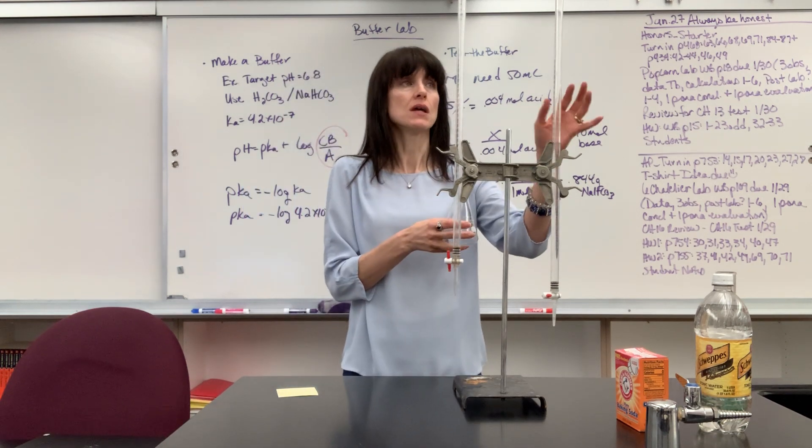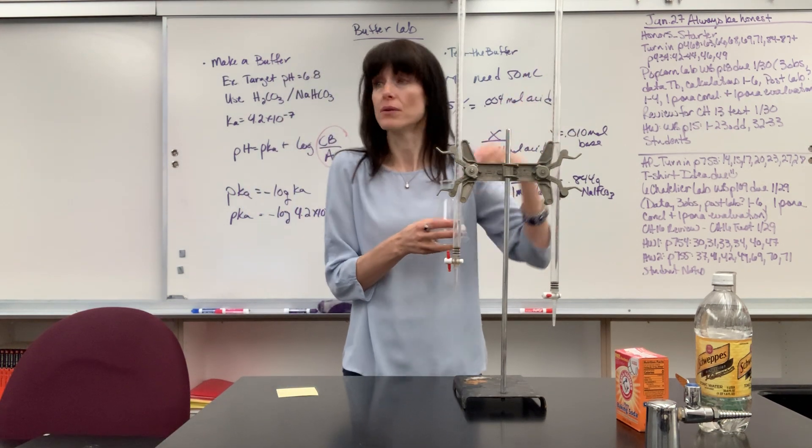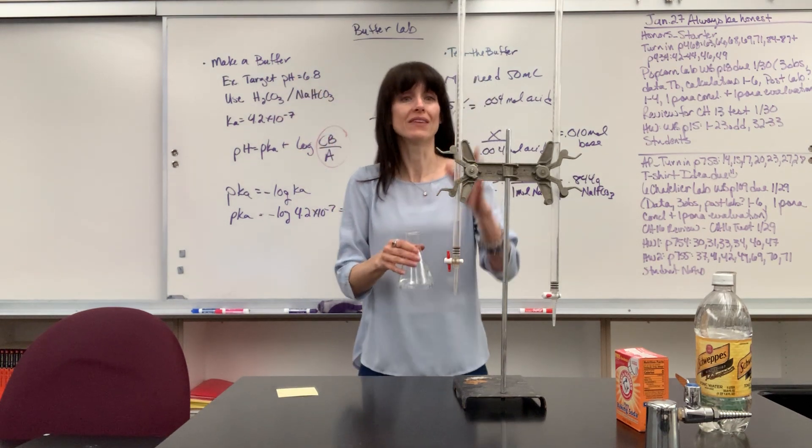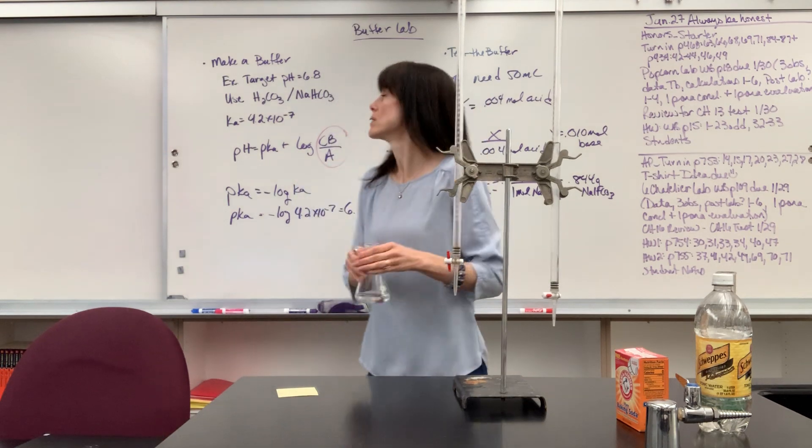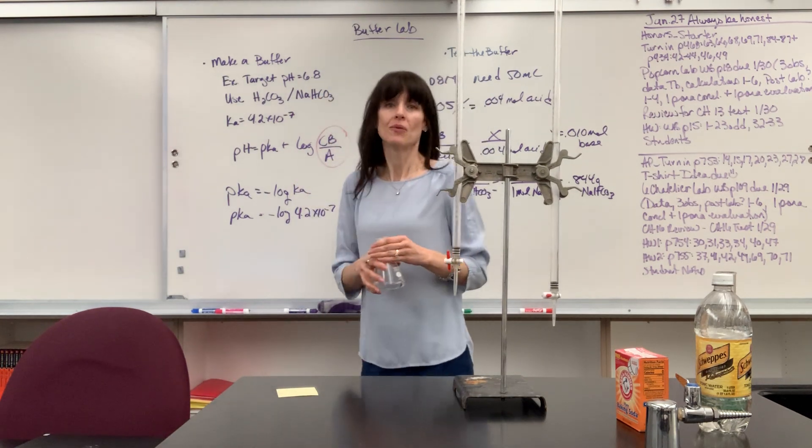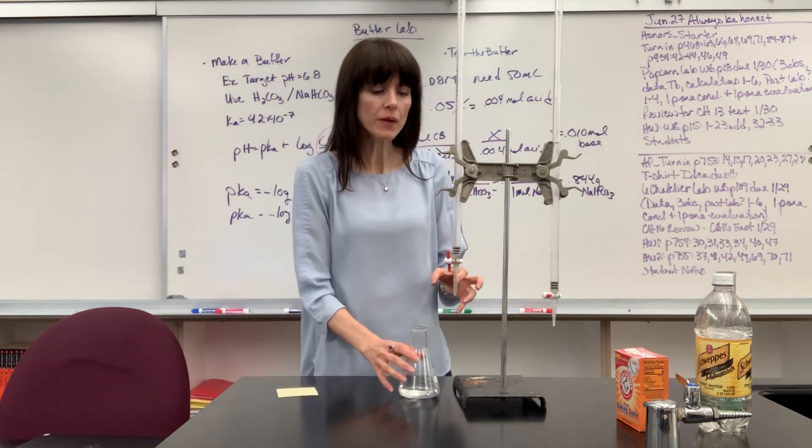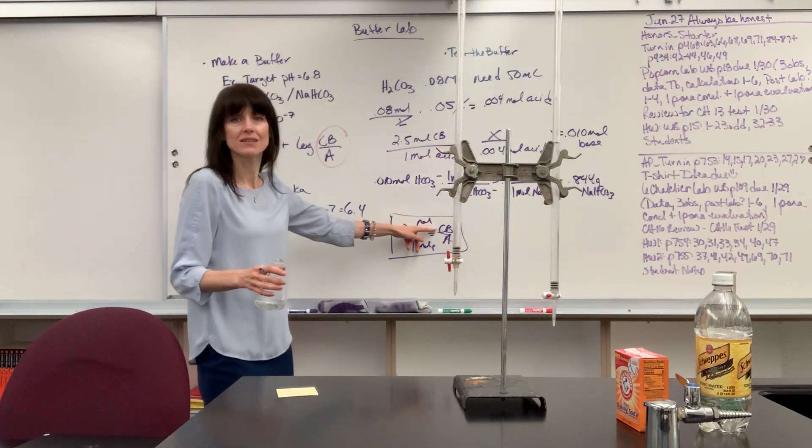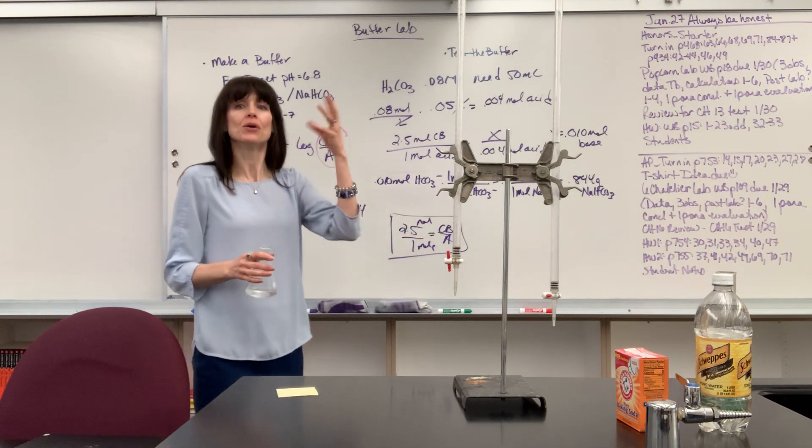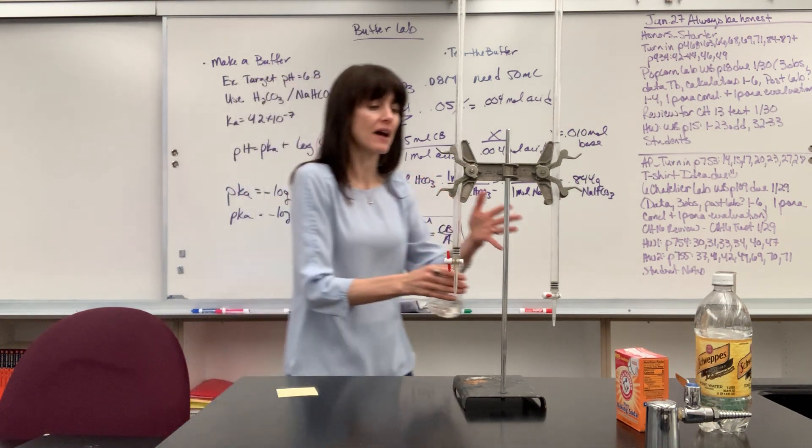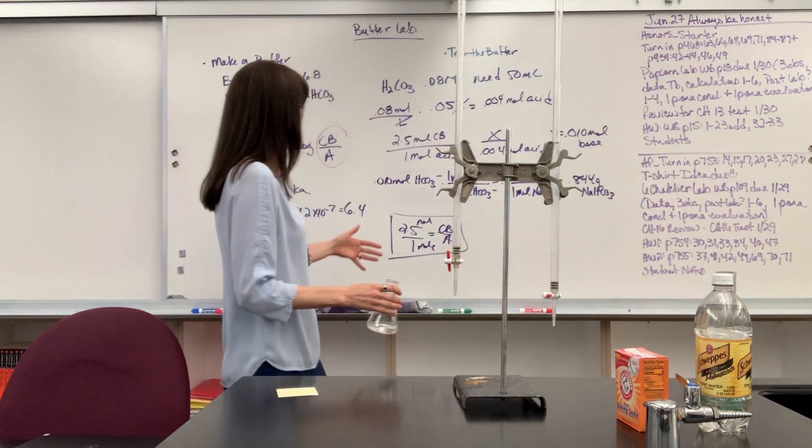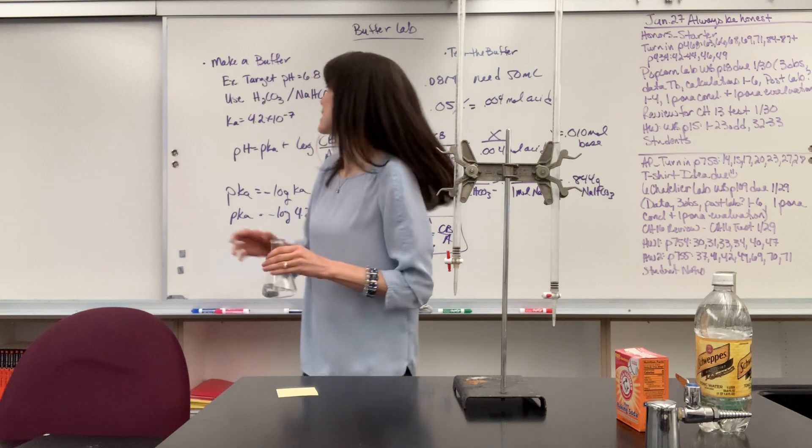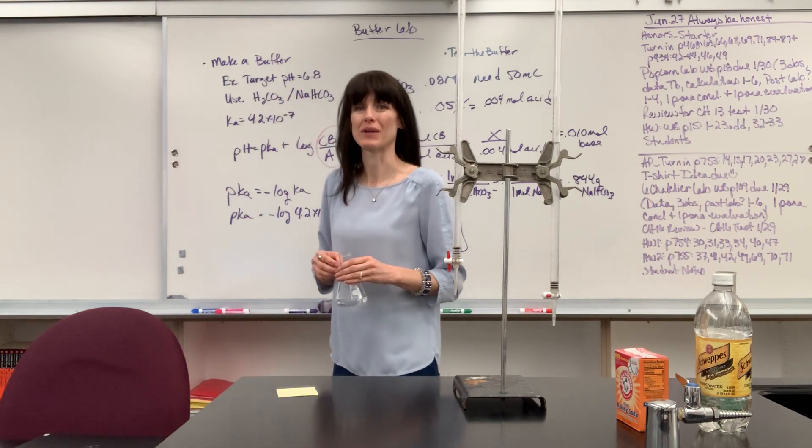When I add the base, it will go up to, after my 10 mils, it will go up to 7.8. And when I add the acid after 10 mils, it will go down to the 5.8. But you'll see this battle. Now when you're adding the acid, this conjugate base, the hydrogen carbonate will react with it. When I add the base, my sodium hydroxide, the acid, which is the carbonic acid, will react with it. So it stays really close to that 6.8 pH. Pretty cool.